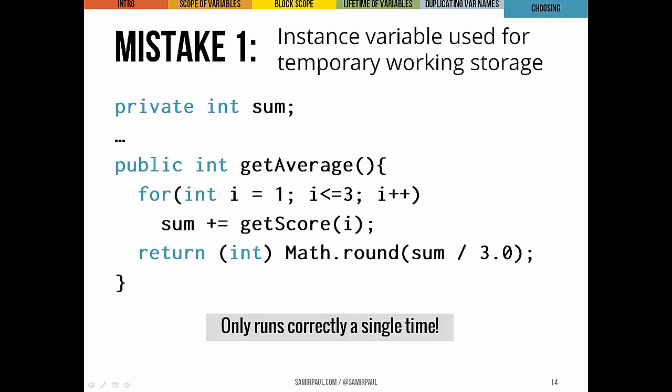One mistake is using an instance variable as temporary working storage. Imagine a Student class with an instance variable tracking `sum`. In `getAverage`, we add each score to `sum` — but `sum` doesn't reset when `getAverage` finishes, so the method only works correctly once; it keeps accumulating every time it's called. The better approach is to declare a local variable `sum` inside `getAverage`, so it resets each time the method runs.